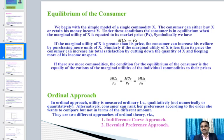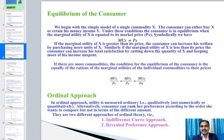If marginal utility of x is greater than its price, the consumer can increase his welfare by purchasing more units of x. If marginal utility of x is less than its price, the consumer can increase total satisfaction by cutting down quantity of x. With more commodities, the equilibrium condition requires equal ratios of marginal utility to price for all goods: MUx/Px = MUy/Py = ... = MUn/Pn.